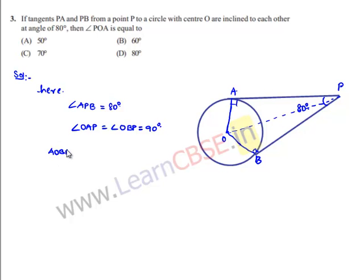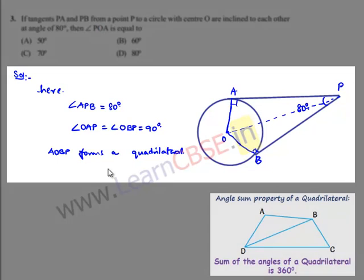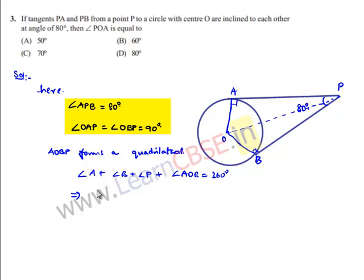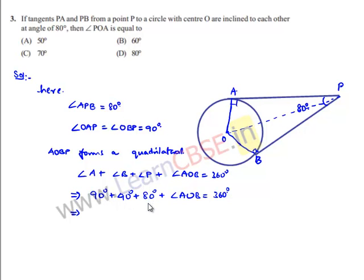A, O, B, P form a quadrilateral. The sum of angles = 360°: angle A + angle B + angle P + angle AOB = 360°. So 90° + 90° + 80° + angle AOB = 360°, giving 260° + angle AOB = 360°, therefore angle AOB = 100°.